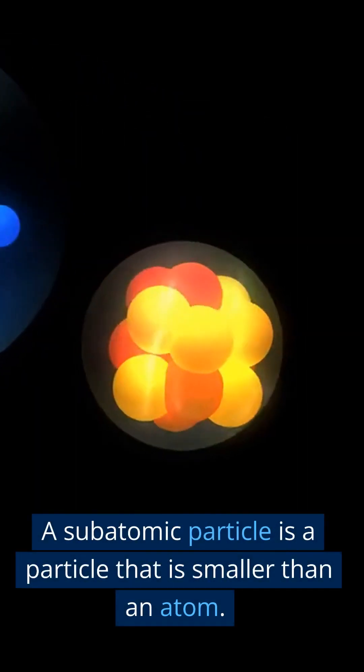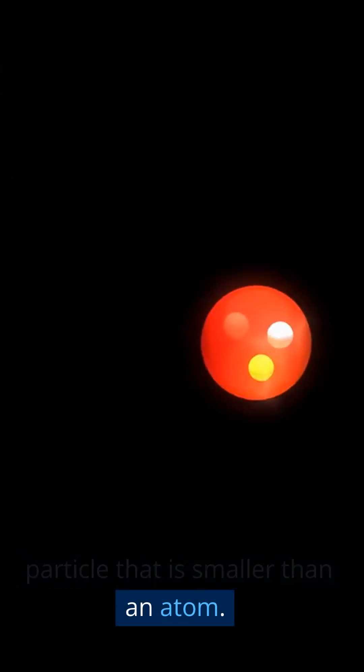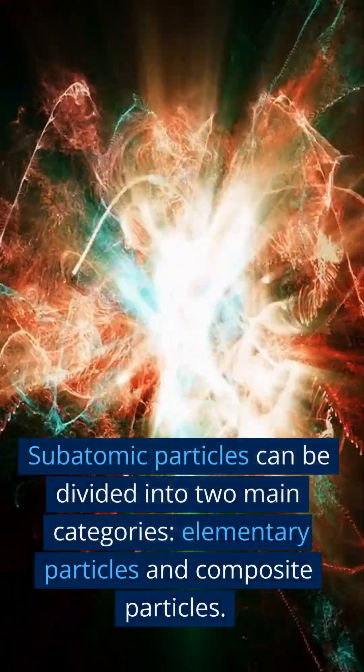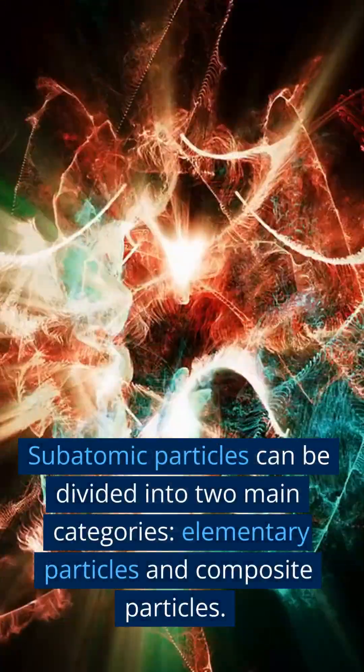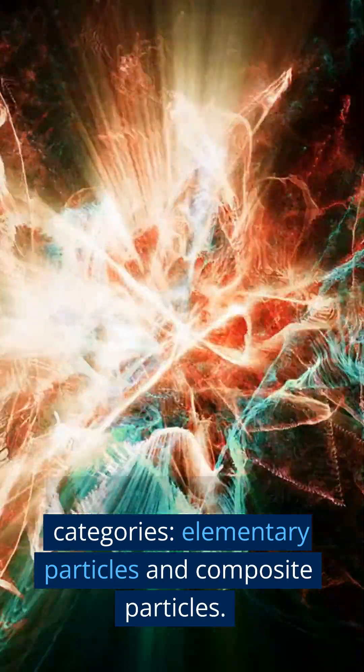A subatomic particle is a particle that is smaller than an atom. Subatomic particles can be divided into two main categories: elementary particles and composite particles.